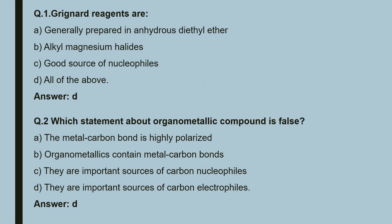Question number 1: Grignard reagents are generally prepared in anhydrous diethyl ether; alkyl magnesium halides; good sources of nucleophile; or D, all of the above. The answer is D.